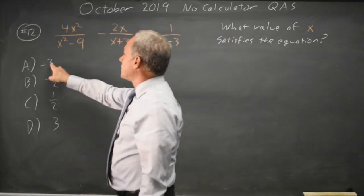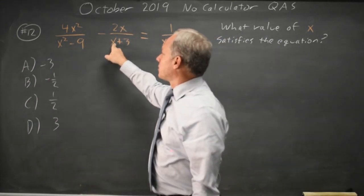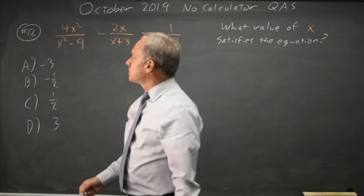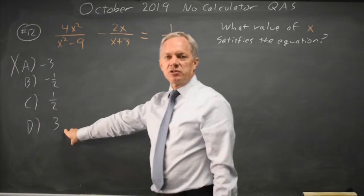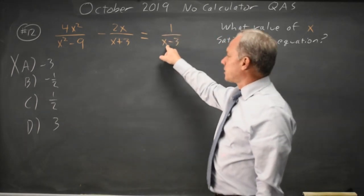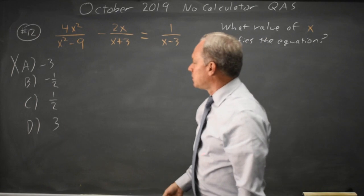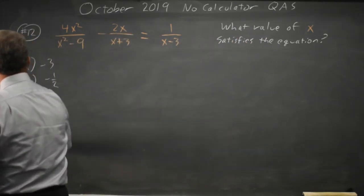First of all, if I substitute in negative 3, I'm dividing by 0 here and here. Division by 0 is not allowed on the SAT, so I can rule out choice A. Similarly, choice D, if I substitute in x equals 3, the right-hand side becomes undefined, so I can rule that out.